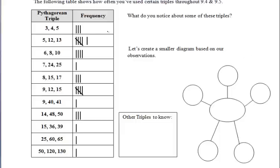The following table shows how often you've used certain triples throughout sections 9.4 and 9.5. You probably did those calculations over and over again, but if you just have these memorized, you wouldn't have to. The first question asks: what do you notice about some of these triples? Let's start with 3, 4, 5 and work down the list.